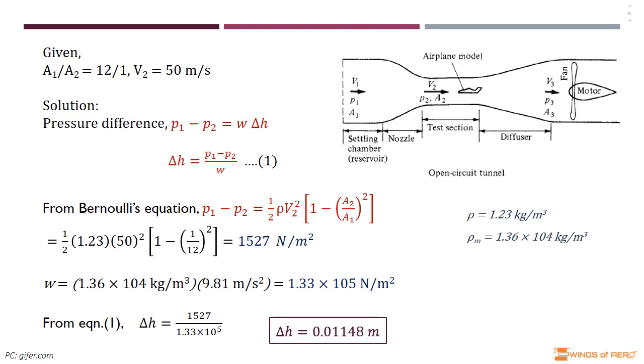Here mercury is the manometer fluid. The constant value of density of liquid mercury is 1.36 × 10⁴ kg/m³, and we know acceleration of gravity g is 9.81 m/s².